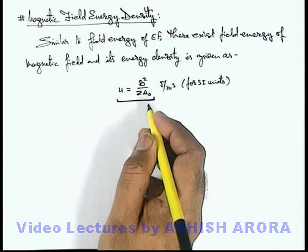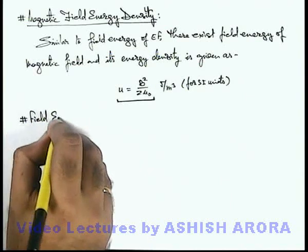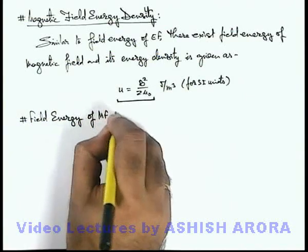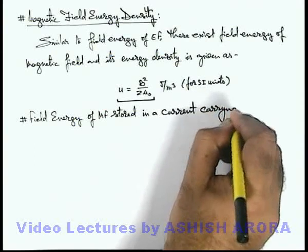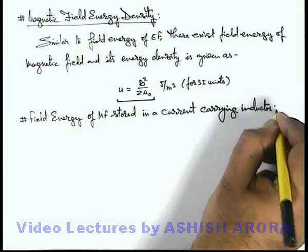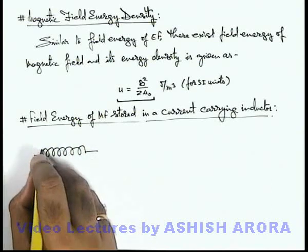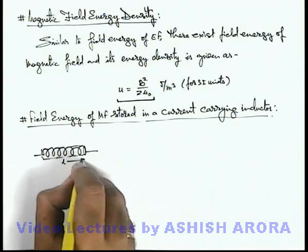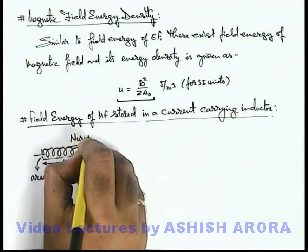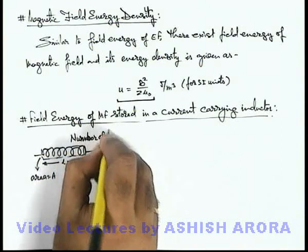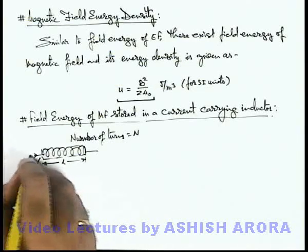And this can also be used to verify the total field energy stored in an inductor. Here we can calculate the field energy of magnetic field stored in a current-carrying inductor. If we calculate it, here we can see, if we are given with an inductor having its total length L, its cross-sectional area is given as A, and total number of turns in the inductor are N.